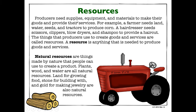Producers need supplies, equipment, and materials to make their goods and provide their services. For example, a farmer needs land, water, seeds, and tractors to produce corn. A hairdresser needs scissors, clippers, blow dryers, and shampoo to provide you with a haircut. Notice corn is a good and a haircut is a service.